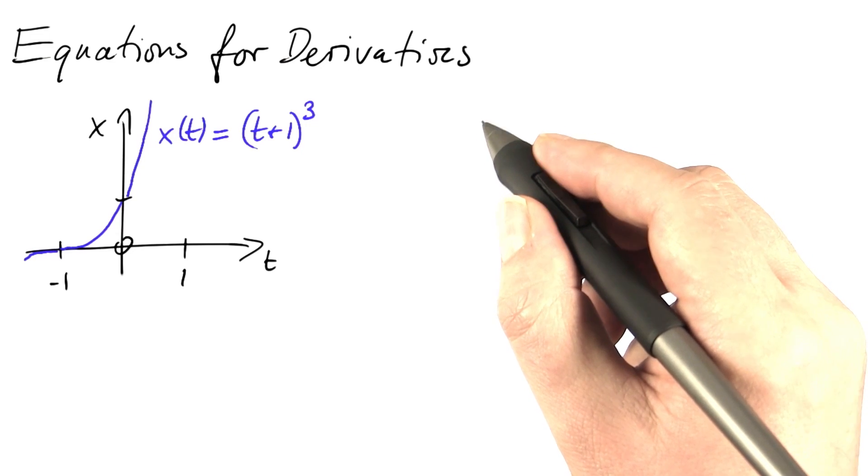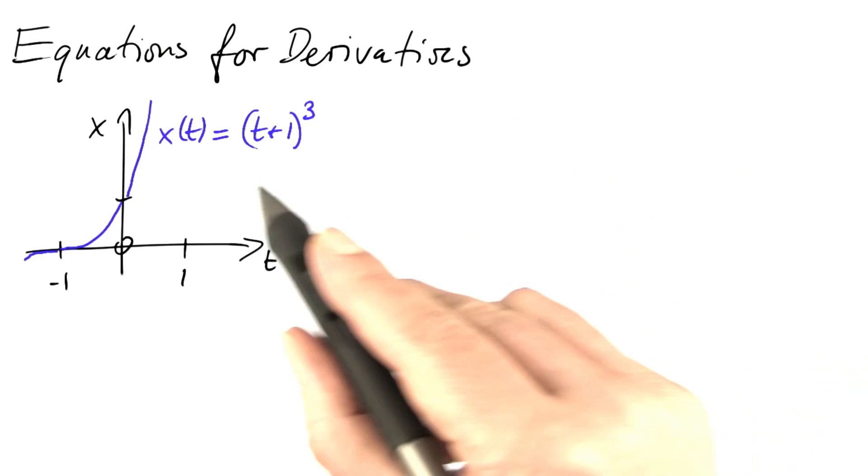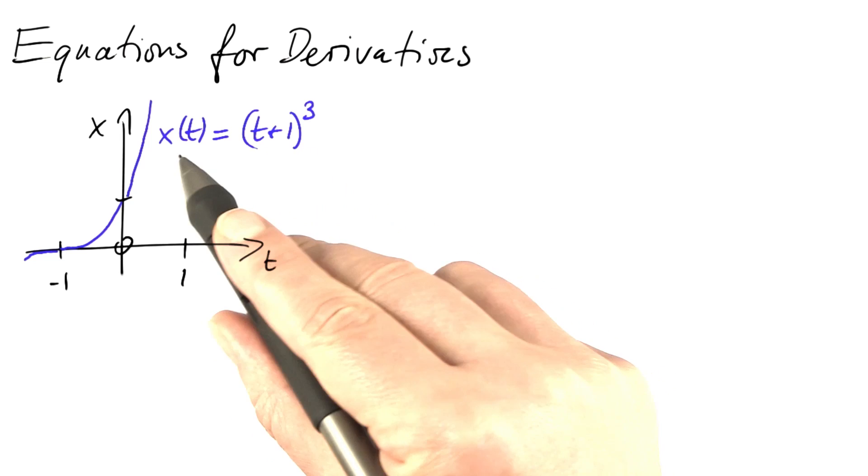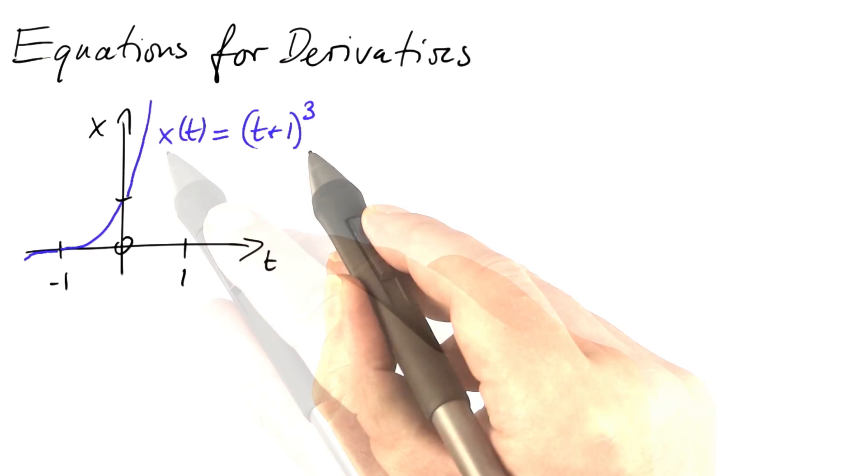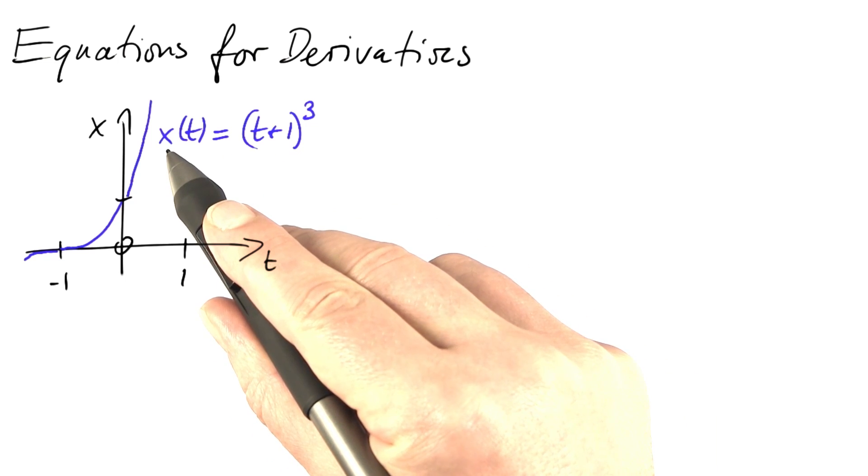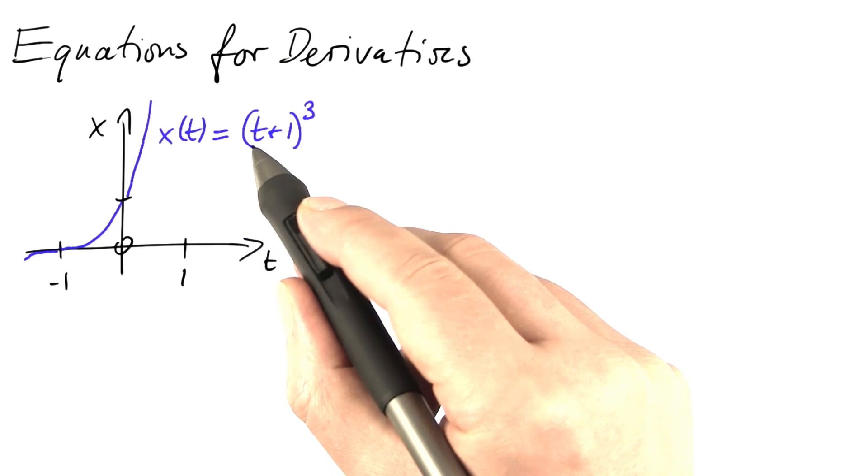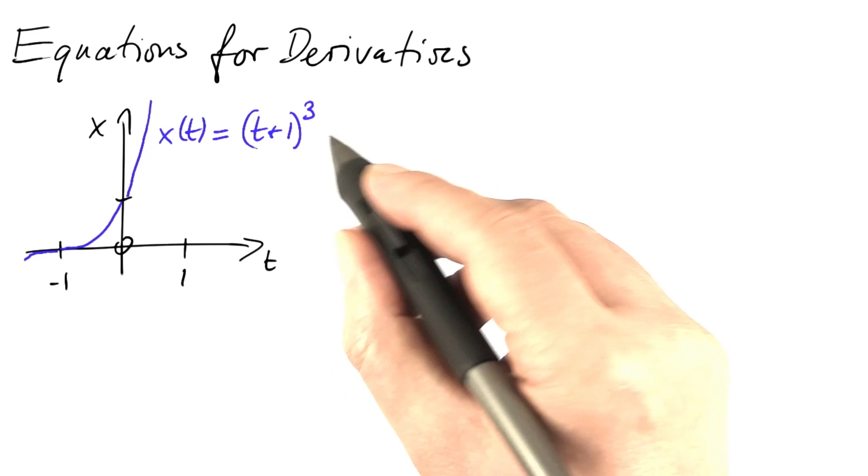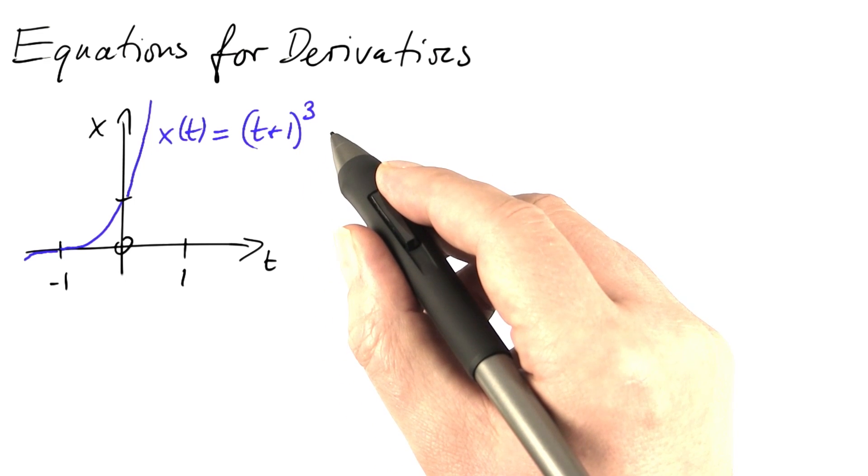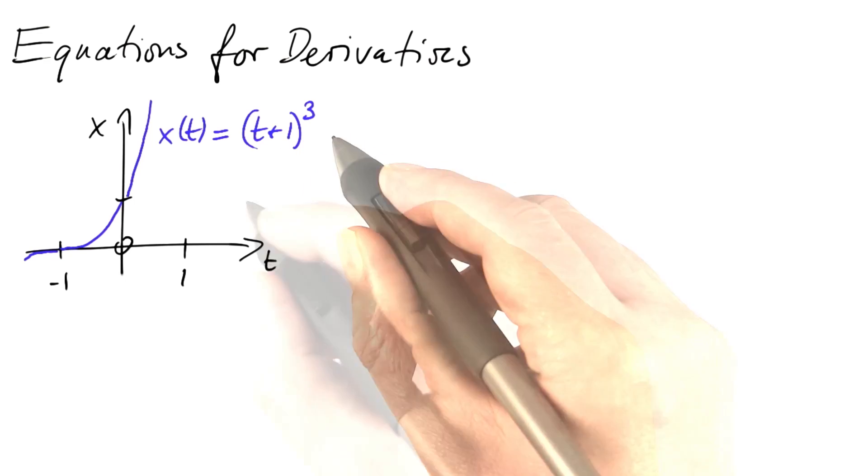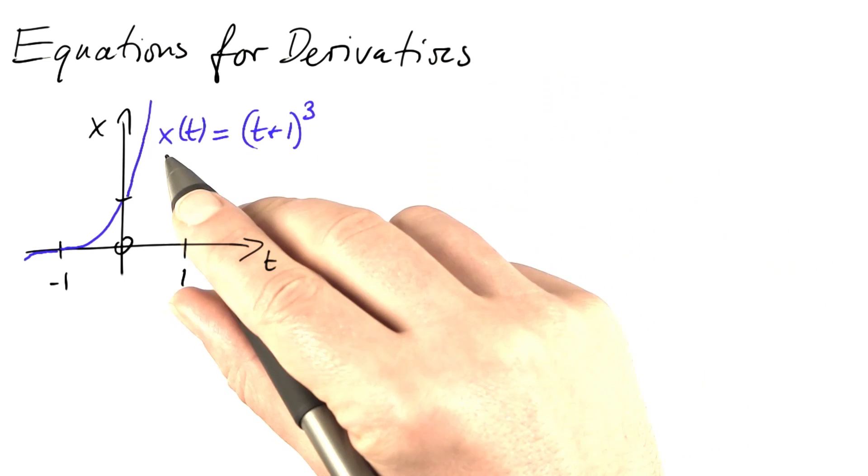Now let's come up with some concrete equations for derivatives. For instance, if this equation describes the dependence of my position on time, the position should be t plus 1 to the third power. Actually, we are ignoring physical units of measurement right now. What would the rate of change be?